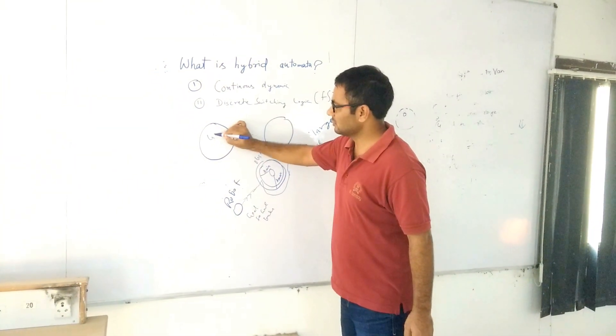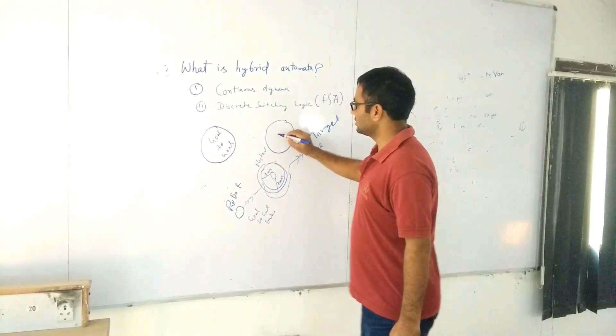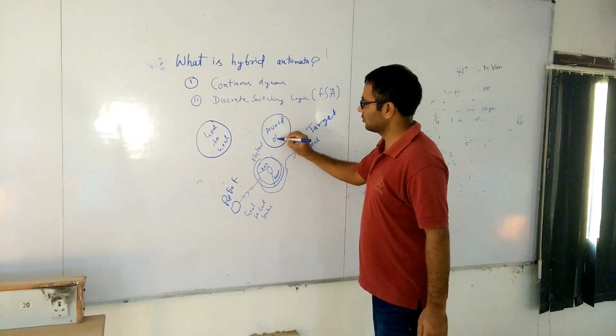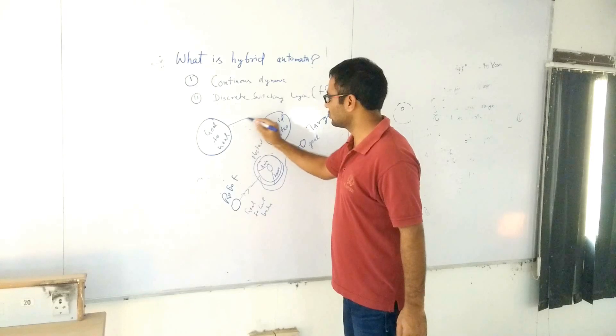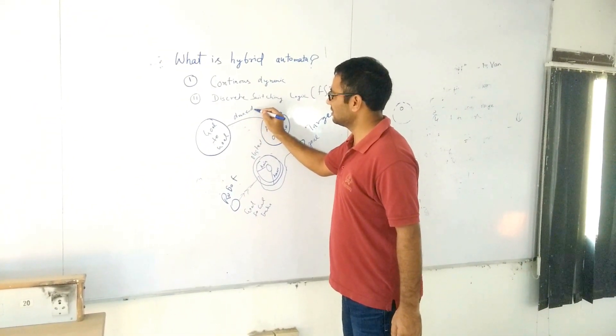Then how am I representing this behavior? There are two states. One is goal-to-goal, and another one is avoid obstacle. Till there is this threshold, that means the distance is D max minus D minimum.